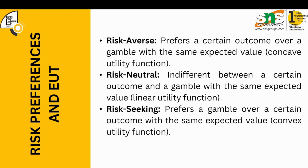Risk averse people prefer a certain outcome over a gamble with the same expected value — this corresponds to a concave utility function. Risk neutral people are indifferent between a certain outcome and a gamble with the same expected value — this is a linear utility function. Risk seeking individuals prefer a gamble over a certain outcome with the same expected value — this is a convex utility function.